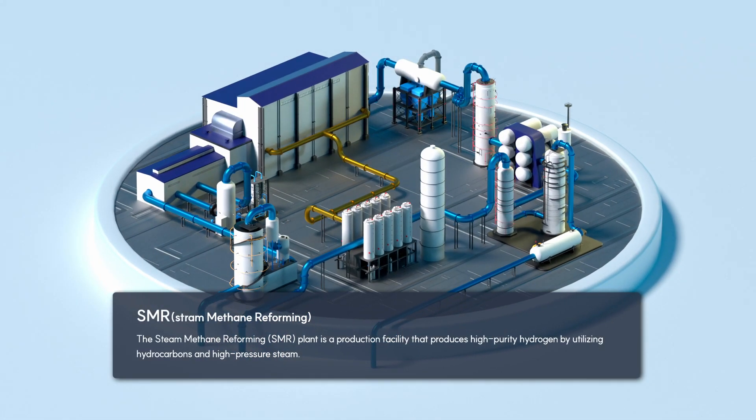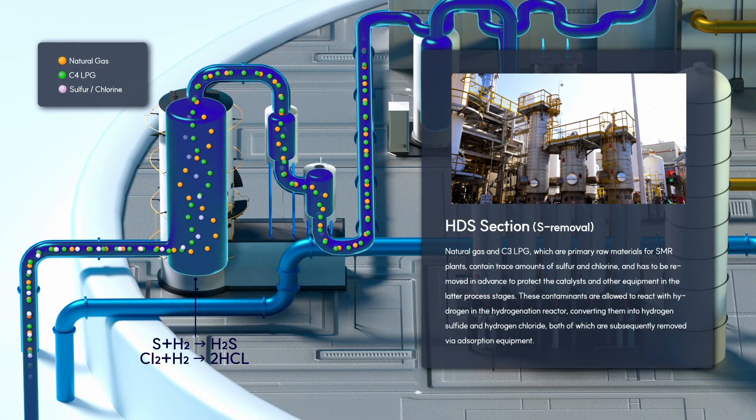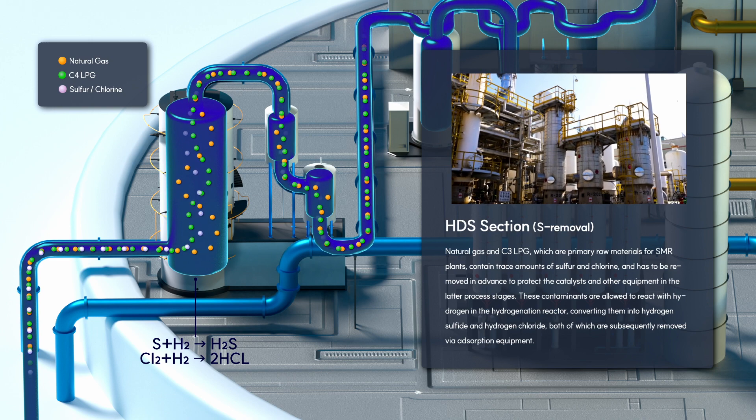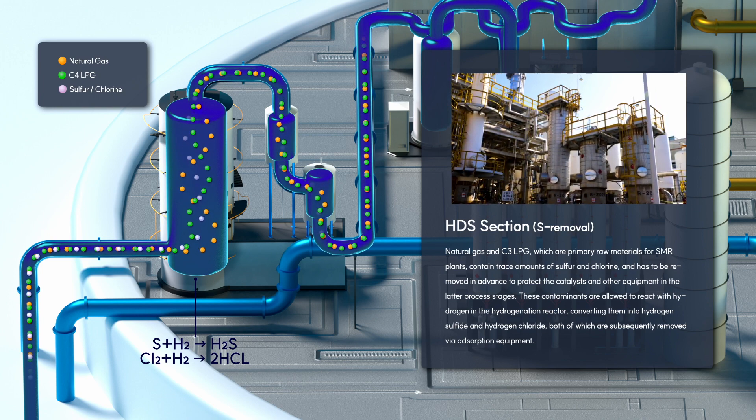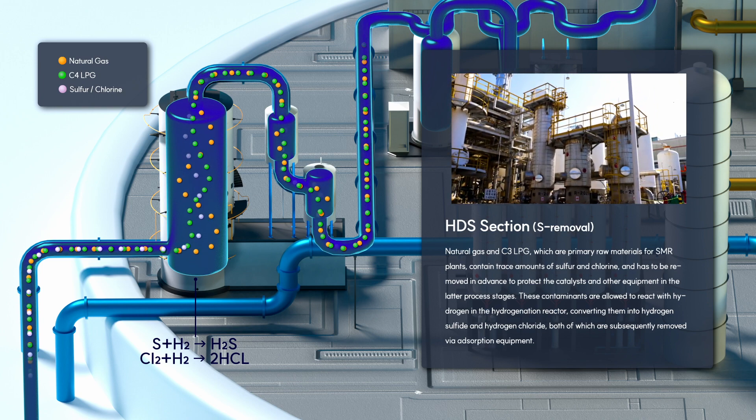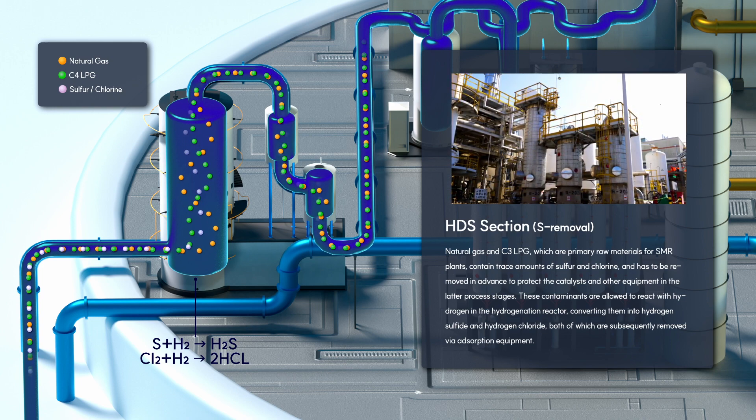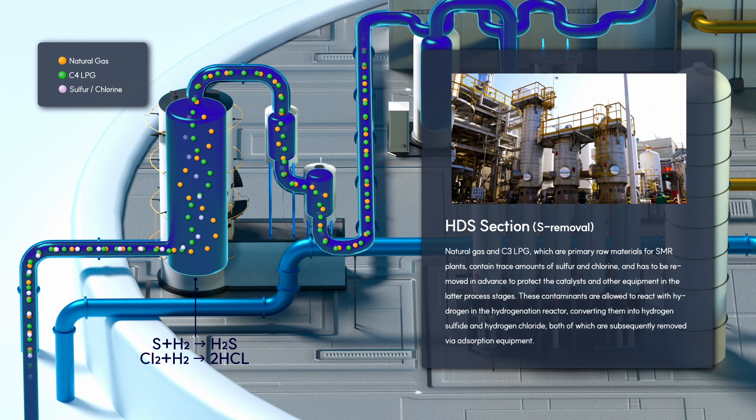The steam methane reforming plant produces high-purity hydrogen by utilizing hydrocarbons and high-pressure steam. Natural gas and C3 LPG, which are primary raw materials for SMR plants, contain trace amounts of sulfur and chlorine that must be removed to protect catalysts and equipment in later process stages. These contaminants react with hydrogen in the hydrogenation reactor, converting them into hydrogen sulfide and hydrogen chloride, which are subsequently removed via absorption equipment.